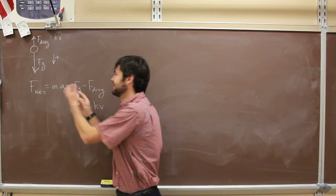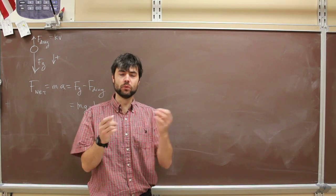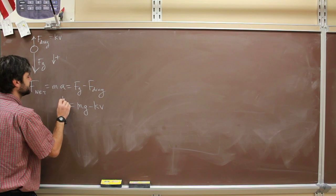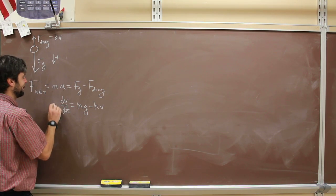So I can't just leave that as a. I need instantaneous acceleration. And what is instantaneous acceleration? It's the derivative of velocity with respect to time. So that's dv over dt, ma.